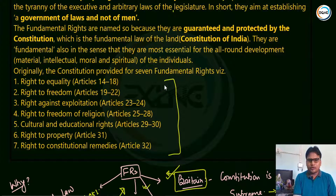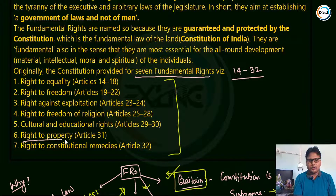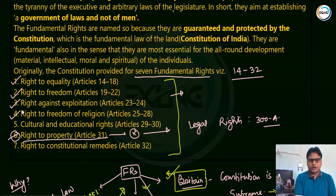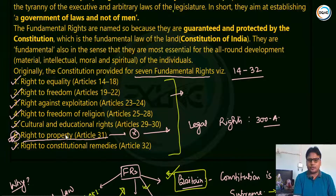Originally, there were seven fundamental rights covering Articles 14 to 32. There was a right called the right to property under Article 31, and that was abolished — it was made a legal right. Currently there are six fundamental rights: right to equality, right to freedom, right against exploitation, right to freedom of religion, cultural and educational rights, and right to constitutional remedy. The right to property was abolished through the 44th Constitutional Amendment Act in 1978, and it was made a legal right under Article 300A.